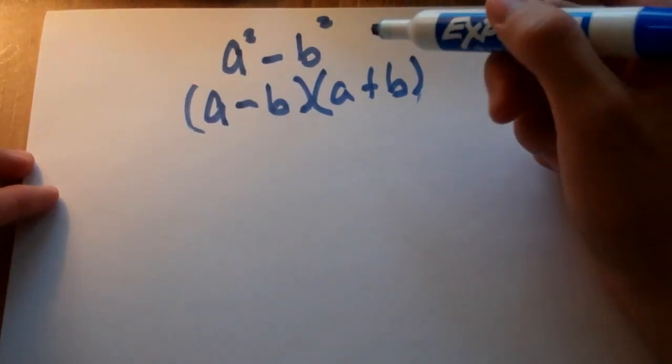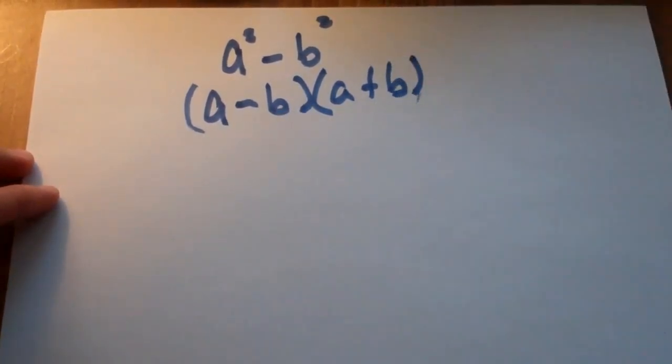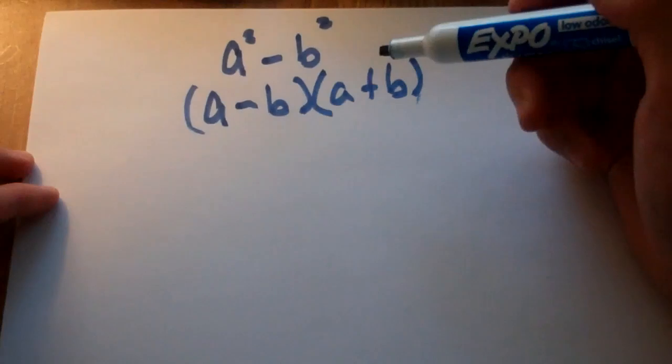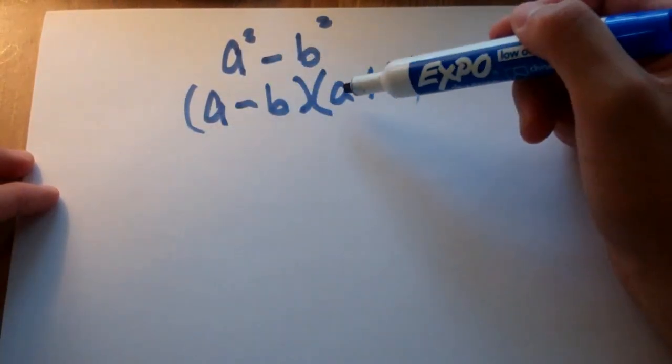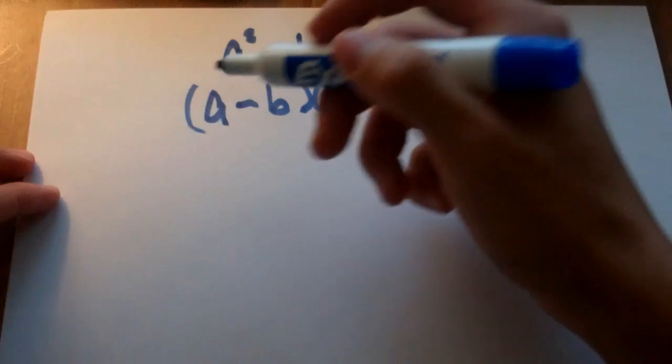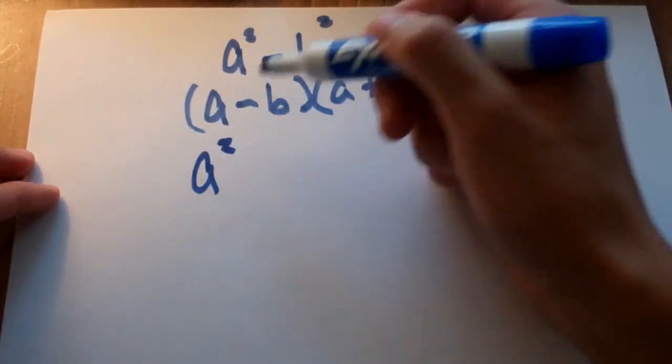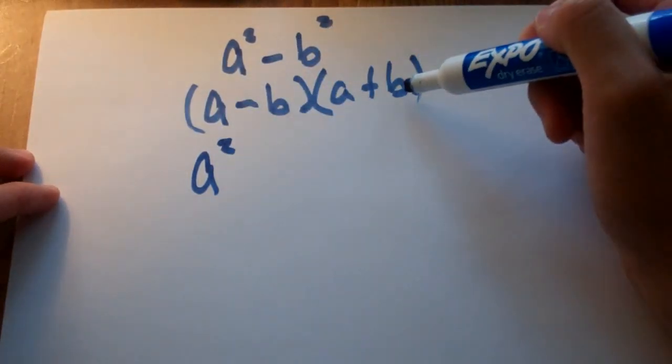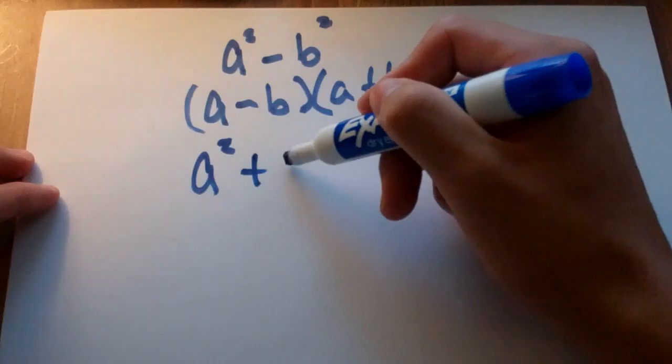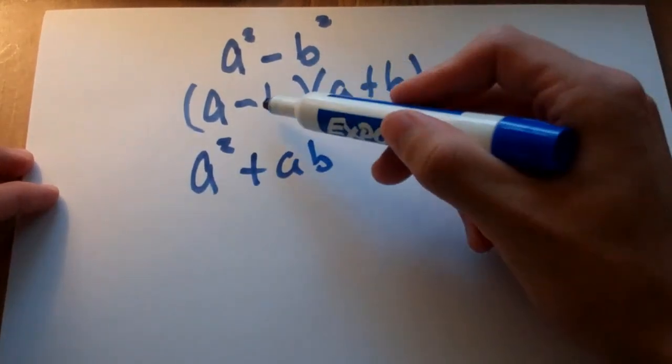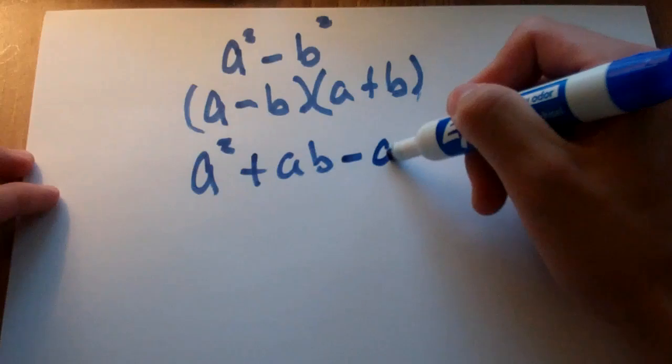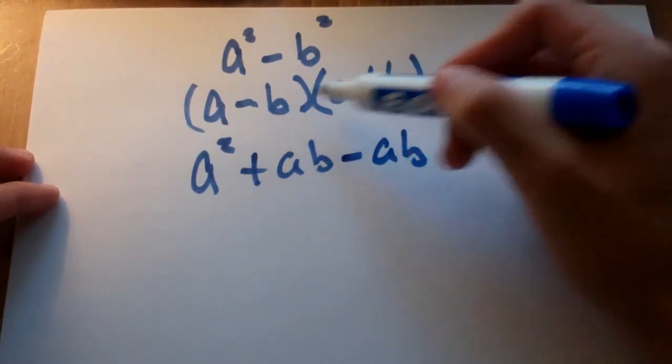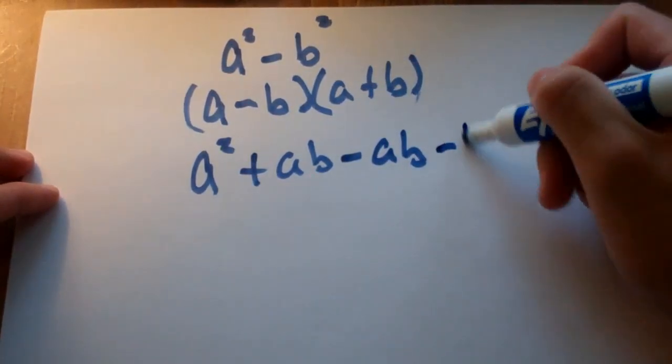You may not believe me, but let's try it. Let's just foil. If we foil this right here, a times a is a squared. a times b is a b. Negative b times a is negative a b. And negative b times b is negative b squared.